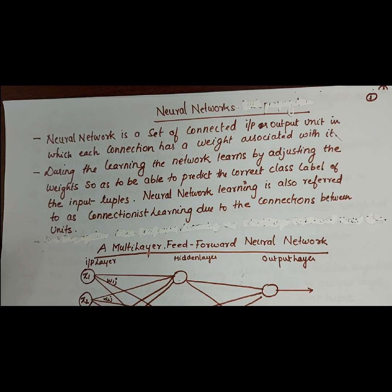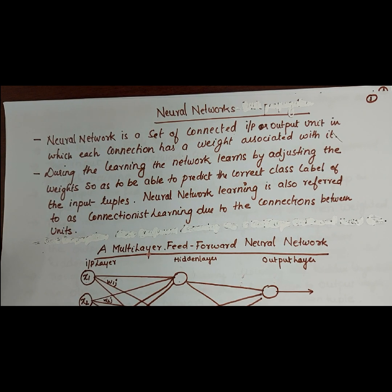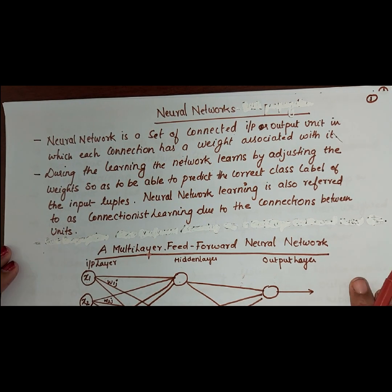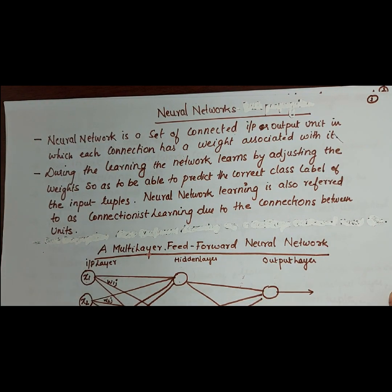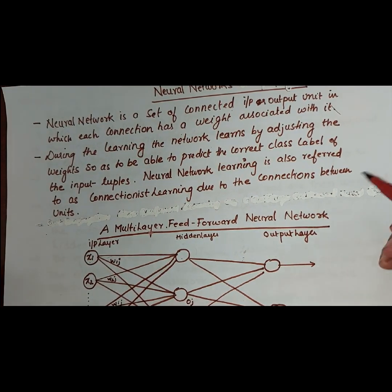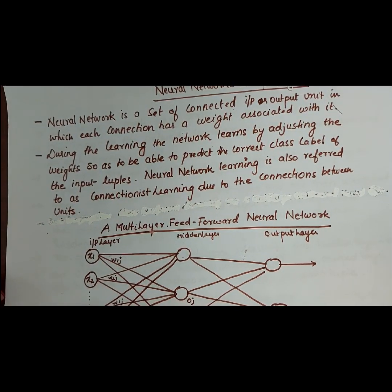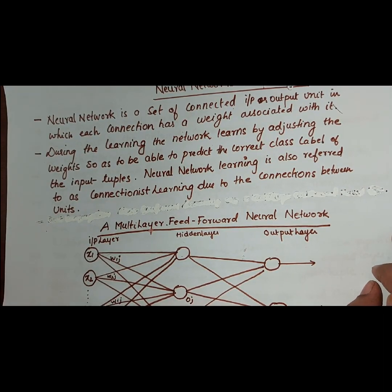A neural network is a set of interconnected input and output units in which each connection has a weight associated with it. You have already studied that it will have some input as well as some weight associated with that input. During learning, the network learns by adjusting the weights so that it will have the ability to correctly label the classes.